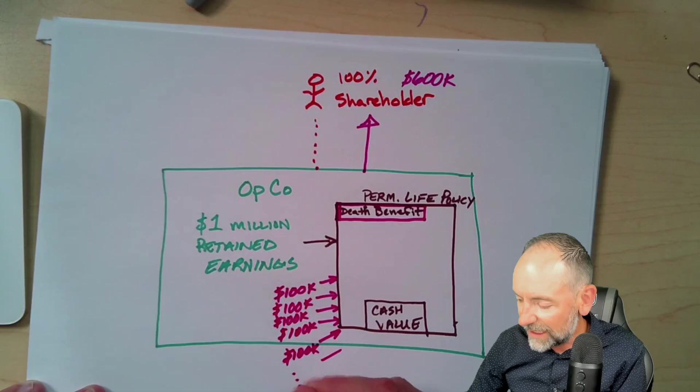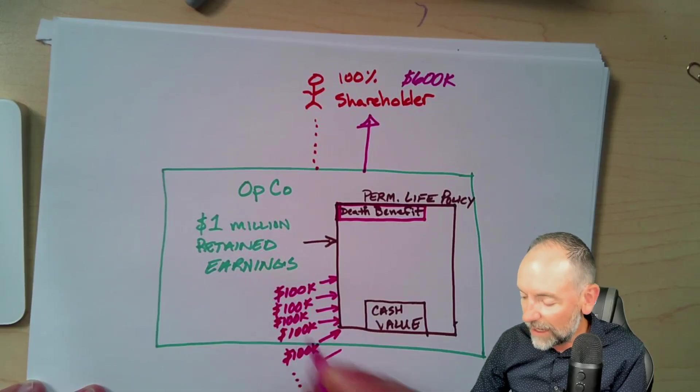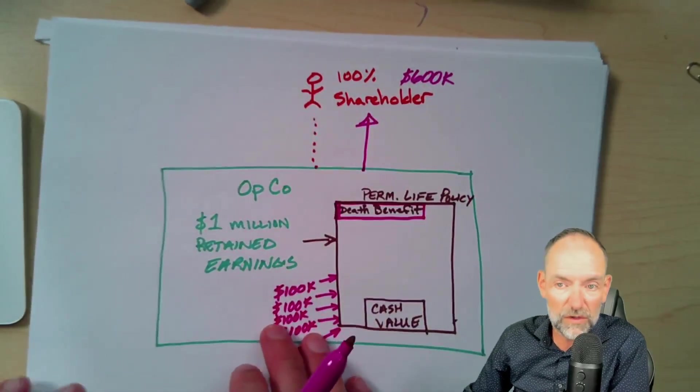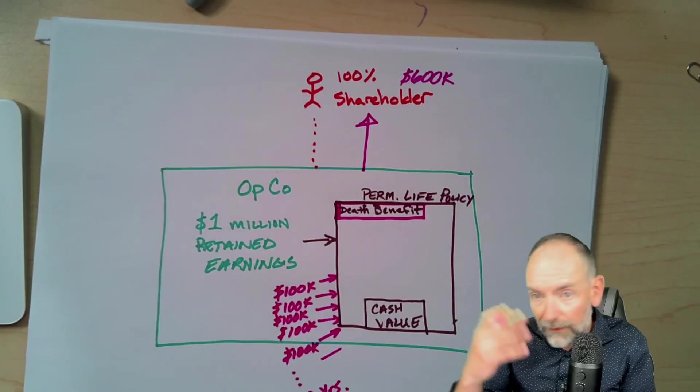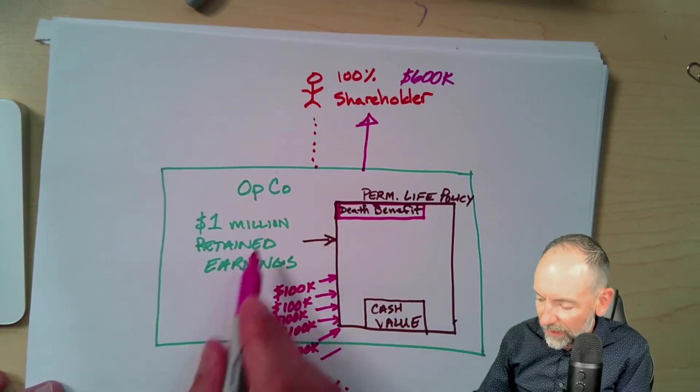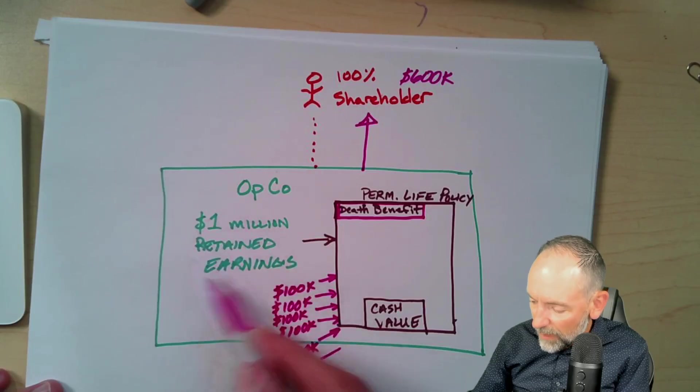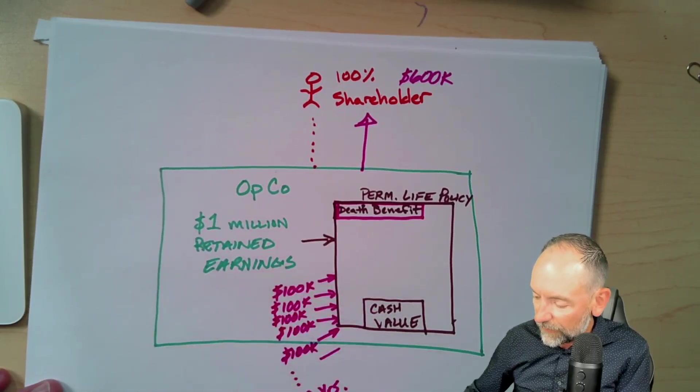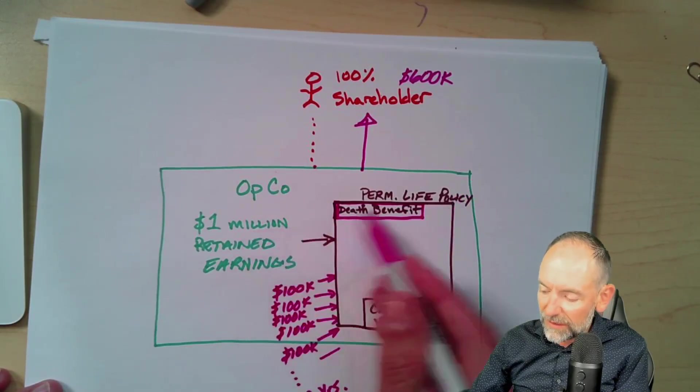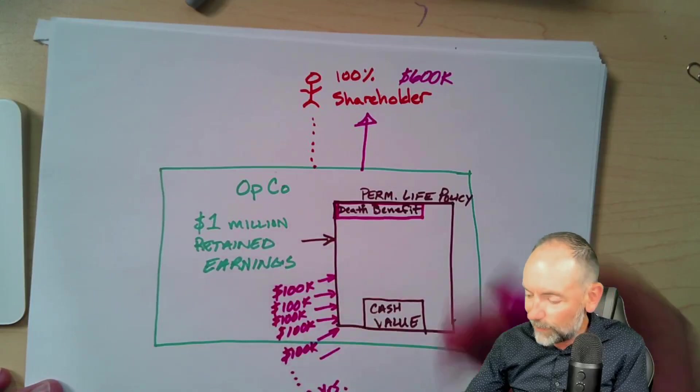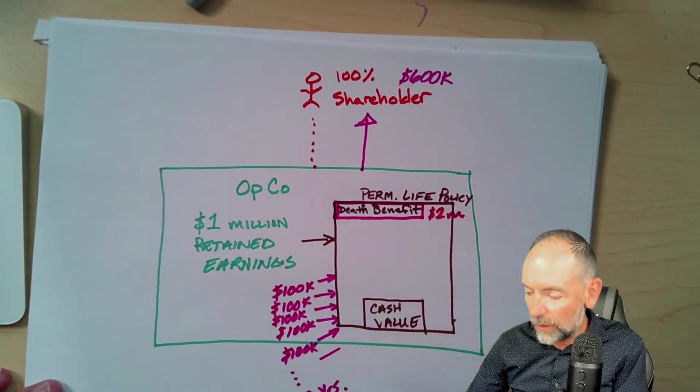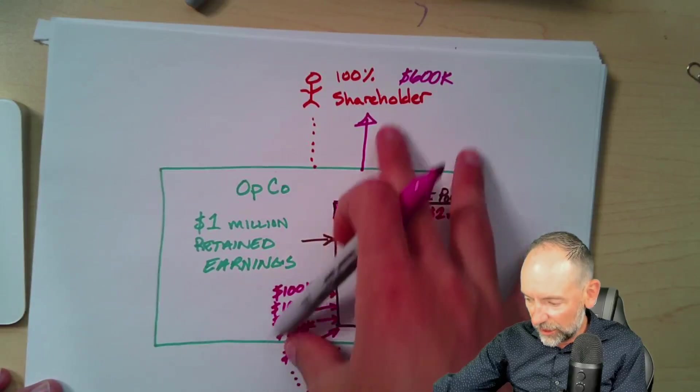Why this is important is because the actual net death benefit, this death benefit, if I put a million dollars in over, let's say, a 10-year period, let's say I put in $100,000 per year, I'm going to use an easy scenario. So I do this year one, I do it year two, I do it year three, I do it year four, every year for 10 years to get this $100,000 in to this policy. And I'm going to do that for 10 years. I've now taken a million dollars of retained earnings.